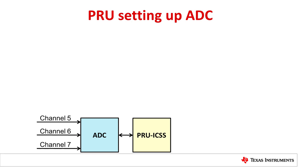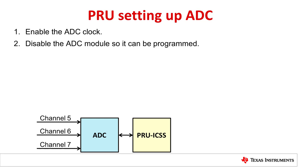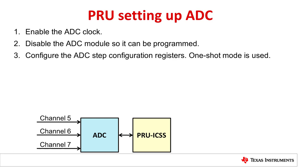In our example, the ADC is controlled by the PRU and considered disabled by the Linux ARM core, meaning the PRU is in charge of initializing the ADC. First, the PRU enables the ADC clock so that it can write to the ADC registers. Then, the PRU disables the ADC module so that the ADC can be programmed. The ADC samples an input voltage during a step, so the PRU must set up the ADC step configuration registers. Our example uses one-shot mode, which means the ADC will only perform one measurement in a particular step before disabling that step. Finally, the PRU enables the ADC module.